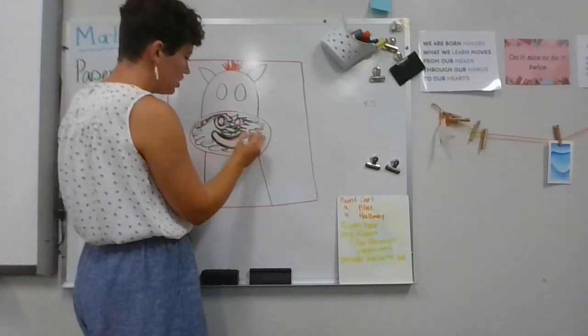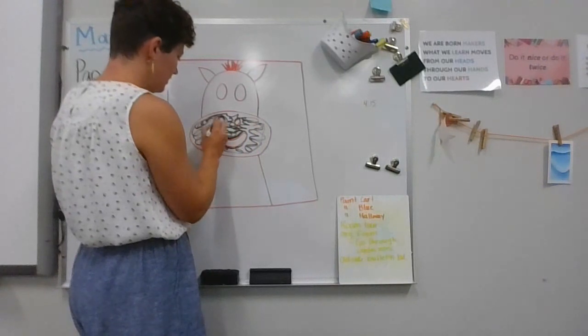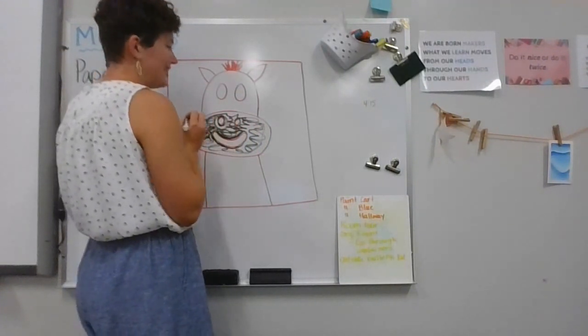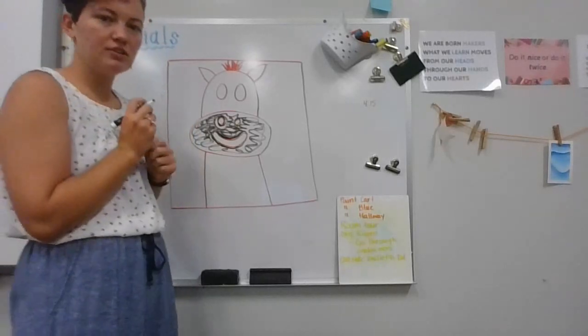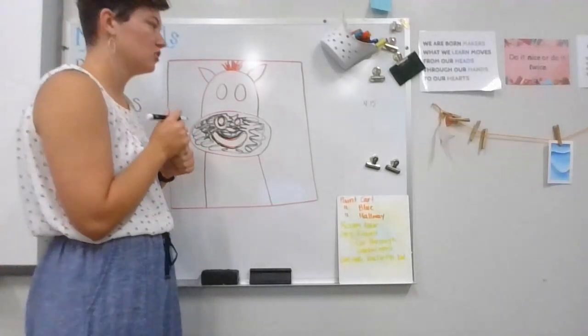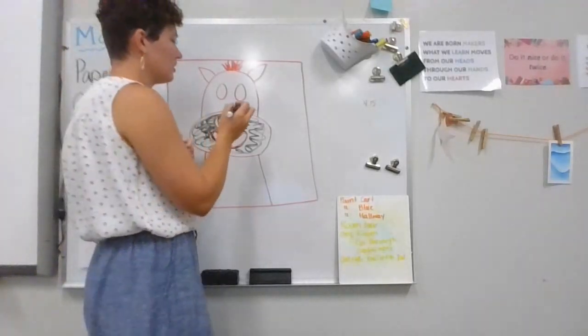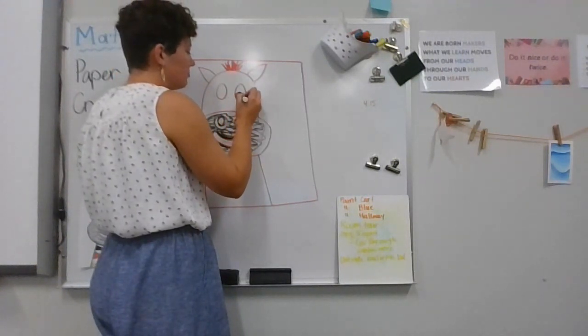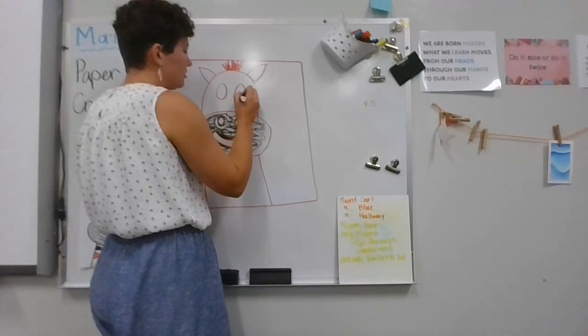Then after I do that, I'm going to color in his eyes. Now you can color in his eyes all black or all blue if you want them to be colored, but I'm just going to do a little circle down here at the bottom. It will be black and the rest of it will be white.